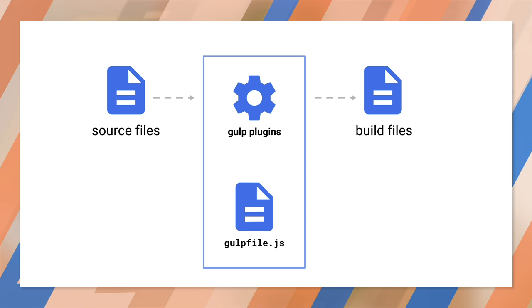Simply put, Gulp reads a file called the gulp file to tell it what to do. It then processes your source files, transforms them, and writes the results to a build directory.